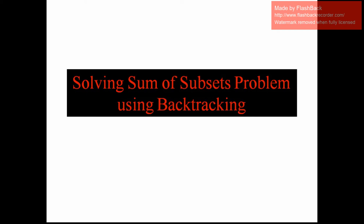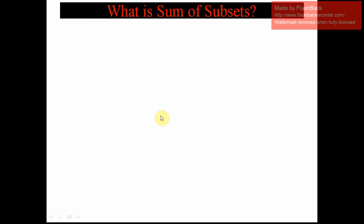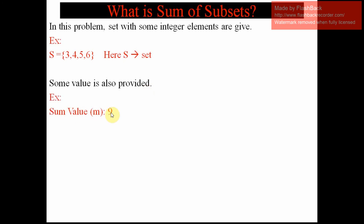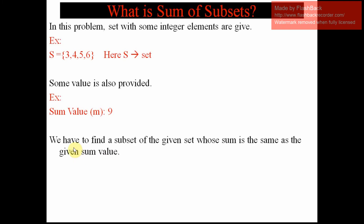In this video we are going to discuss solving the Sum of Subsets problem using backtracking. In this problem, a set with some integer elements is given — for example, the set contains elements 3, 4, 5, 6 — and a sum value is provided. For example, the sum value is 9, referred to as M.